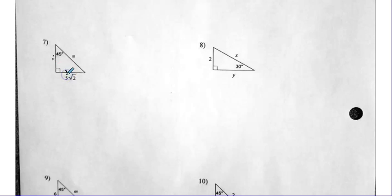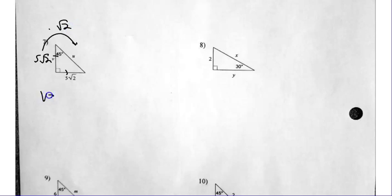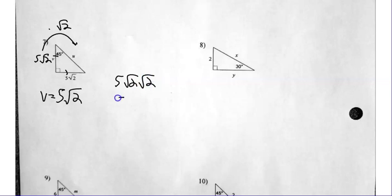Number seven — 45-45-90. These are both the same, so this is five radical two right here. How do I go from a leg to the hypotenuse? I multiply by radical two. So V is five radical two, the same as the other leg. And then five radical two times radical two is the same thing as five times two. So U is 10.